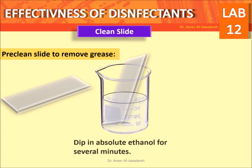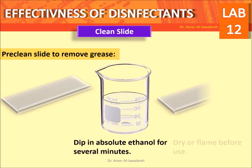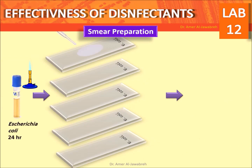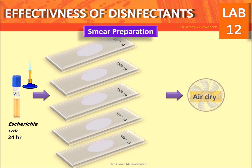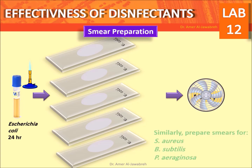Dip slides in absolute ethanol for several minutes, then dry or flame before use. Smear preparation: prepare five smears from broth containing Escherichia coli and air dry. Prepare smears in the same way for Staphylococcus aureus, Pseudomonas aeruginosa, and Bacillus subtilis.